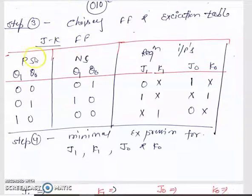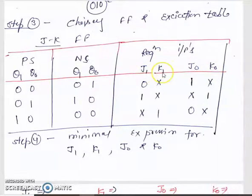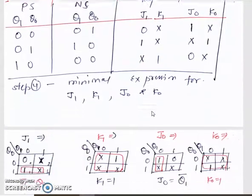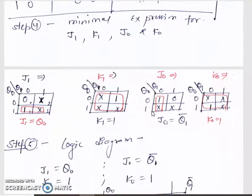For the JK flip-flop, we set up present state and next state columns for the 2 flip-flops, then determine the required inputs: J0, K0, J1 and K1, using the excitation table of the JK flip-flop. After that, we find the minimal expression using the K-map.